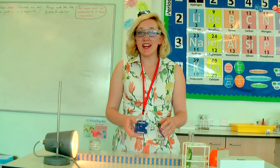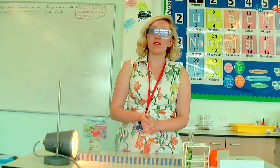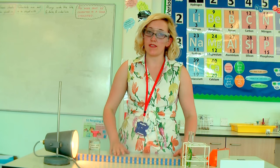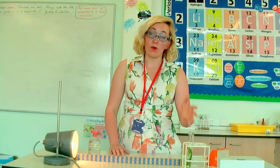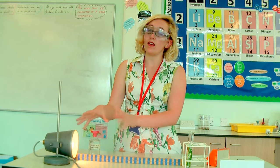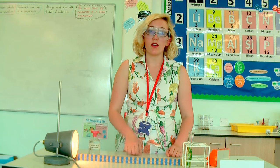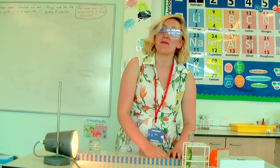Hello everyone. Today we're going to be having a look at the AQA required practical for biology, which is on photosynthesis. For this practical we're going to be investigating how pondweed is affected by the distance away that a light bulb is. For the pondweed, it's quite easy to measure the rate of photosynthesis happening because you can see the number of bubbles that are coming off the leaves.